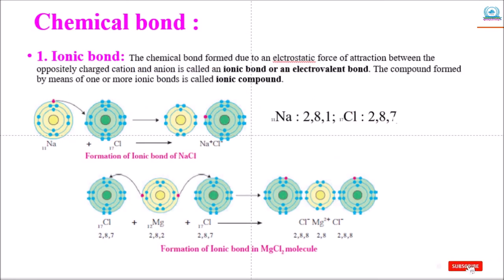Then chemical bonds. Chemical bonds are of two types. First is ionic bond. The chemical bond which is formed due to an electrostatic force of attraction between cations and anions is called ionic bond or electrovalent bond. The compound formed by means of one or more ionic bonds is called ionic compound.